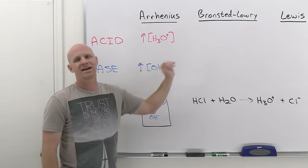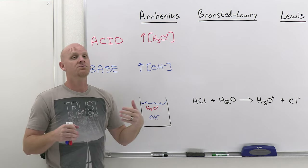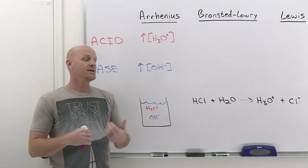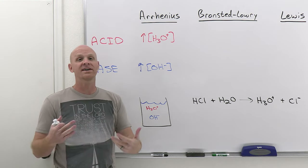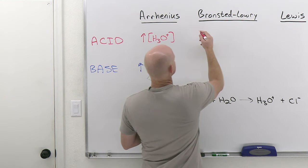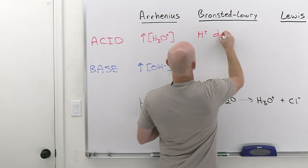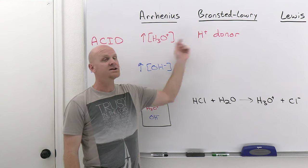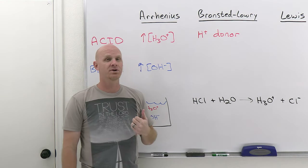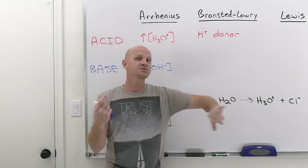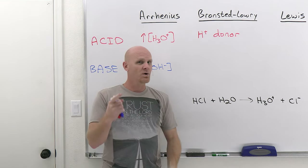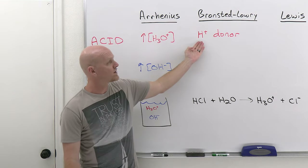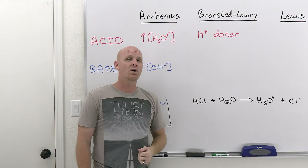Bronsted-Lowry came along and said, we've got a better definition. For one, this doesn't have to only be about water — we can use any solvent, like alcohols, or we don't even need a solvent at all; we can do acid-base reactions in the gas phase. The way they looked at this is that an acid was simply an H+ donor — it didn't have to be in water at all. Another word for H+ is a proton, because hydrogen has one proton in its nucleus and one electron, and H+ is just that bare proton. So a Bronsted-Lowry acid is a proton donor.